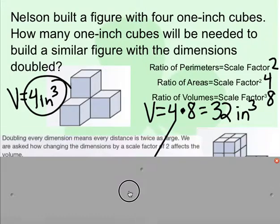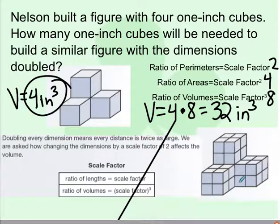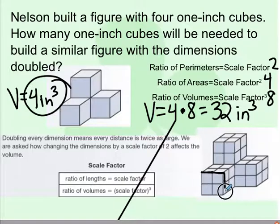What this looks like is: instead of just one cube on each side, we have two all the way around, which means we need 32 of them in total.